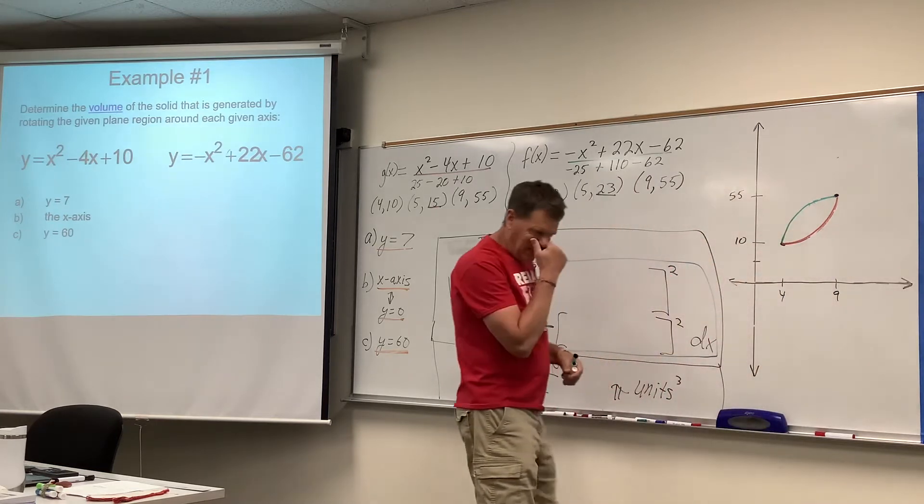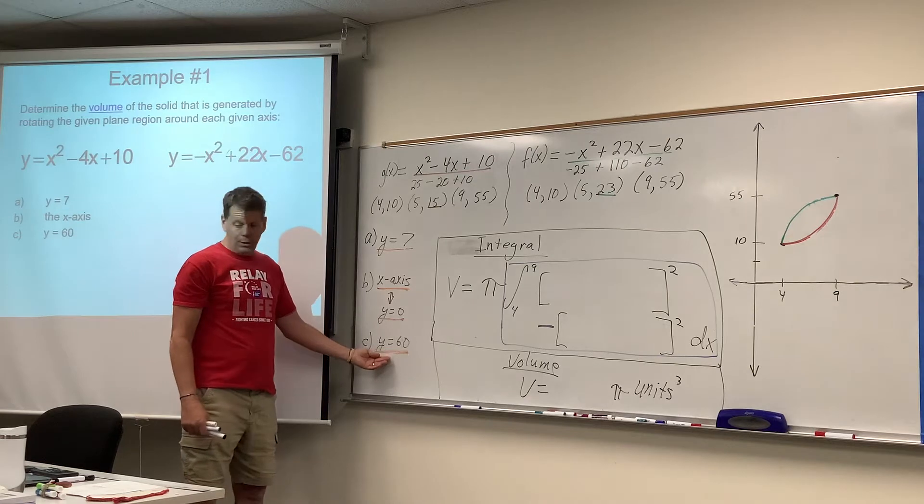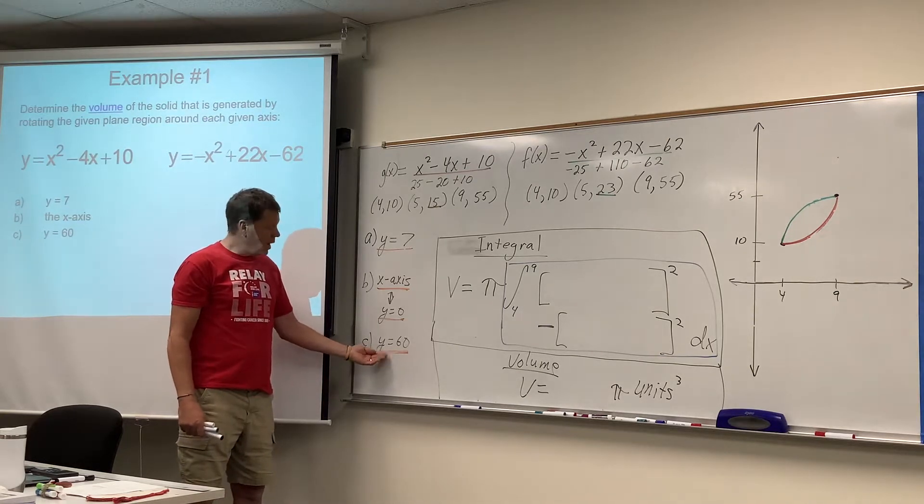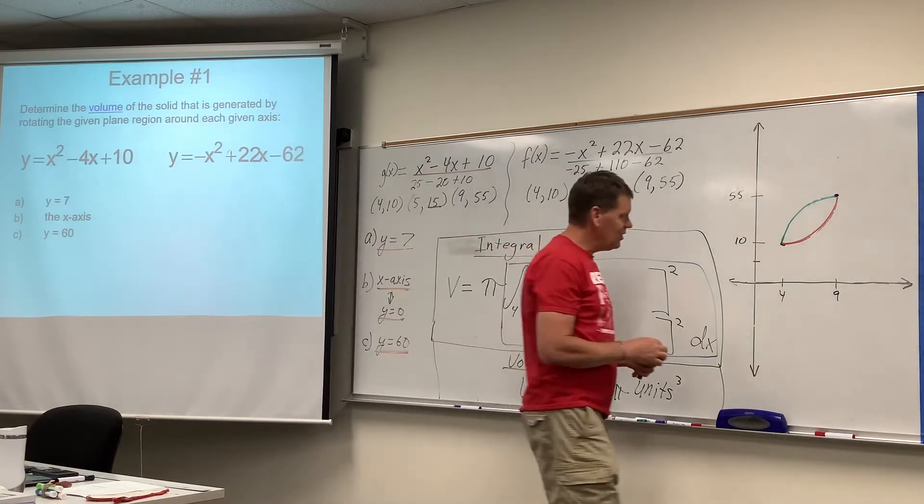We've done some test numbers in between. Now, in part C, they want us to revolve this around the horizontal line, y equals 60. Notice this changes things significantly.